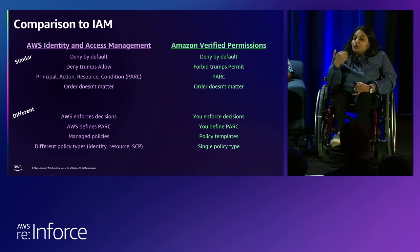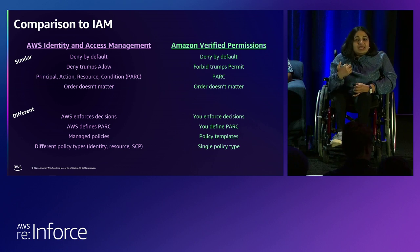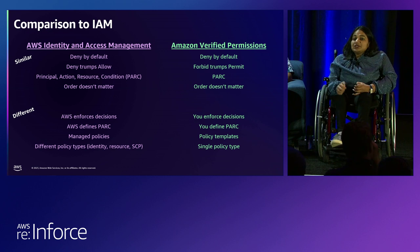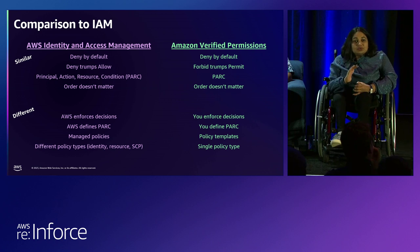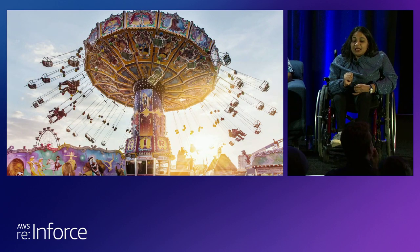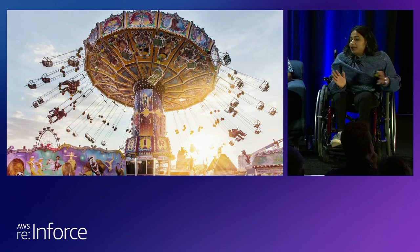In IAM, AWS enforces the decision. AWS defines the nouns and the verbs — what are the resources, the actions, who are the users. But in Verified Permissions, you enforce the decisions. You define the nouns and the verbs — who are the users, what are the resources, which are the actions.